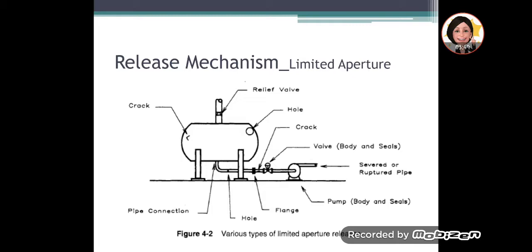This is an example of various types of limited aperture releases that could possibly happen. If you notice, if you have a tank, we have many different accessories as well as joinings that are present in building a tank. So anything could happen, such as a crack on the body, there could be a hole, the relief valve, there could be a puncture or there could be a hole in a relief valve. There could be a leak at the bottom of the vessel where the pipe runs, then you can have flanges that crack, we can have a problem with the valve, we could have severed the pipes, any parts of the pipes, the pump, the body and the seals may leak and there are many other apertures that could appear and cause leakage.